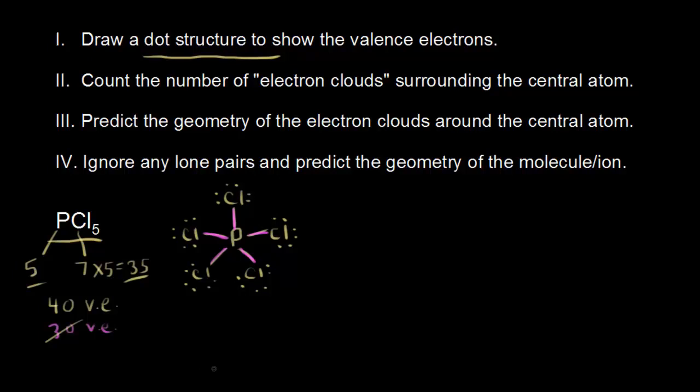Notice that phosphorus is exceeding the octet rule here — there are 10 valence electrons around phosphorus. It's okay for phosphorus to do that because it's in period 3 on the periodic table. I like to think about formal charge: if you assign a formal charge to phosphorus, you'll see it has a formal charge of 0, and that helps explain the resulting dot structure.